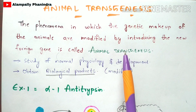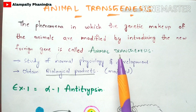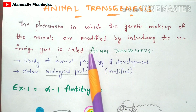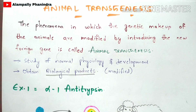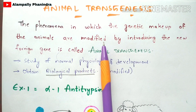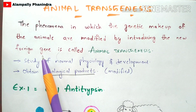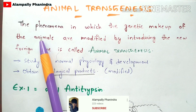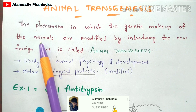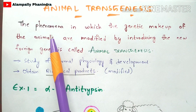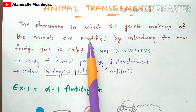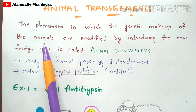This animal transgenesis process is done using three techniques, which will also be explained in upcoming videos. The genetic makeup — meaning the genetic characteristics or genetic information of a particular animal — gets modified by introducing a new foreign gene. This foreign gene is injected into the animal, causing the characteristics of the animal to change because the foreign gene exhibits its own properties.